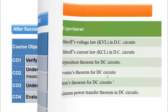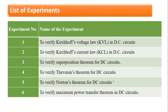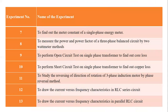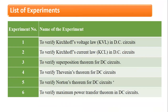Let us see the various experiments in this lab. There are a total of 13 experiments. The first six experiments are mentioned here. The first experiment is to verify Kirchhoff's Voltage Law, KVL, in DC circuits. KVL states that in any given mesh, the net voltage is zero — the summation of all voltages is zero. This theoretical concept is verified practically in this particular lab.